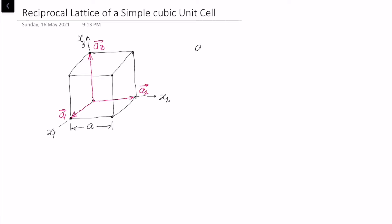We can write these three basis vectors: a1 as a times e1, where e1 is the unit vector along x1; a2 as a times e2, where e2 is the unit vector along x2; and a3 as a times e3, where e3 is the unit vector along x3. The magnitudes of a1, a2, a3 are equal and they are mutually orthogonal.